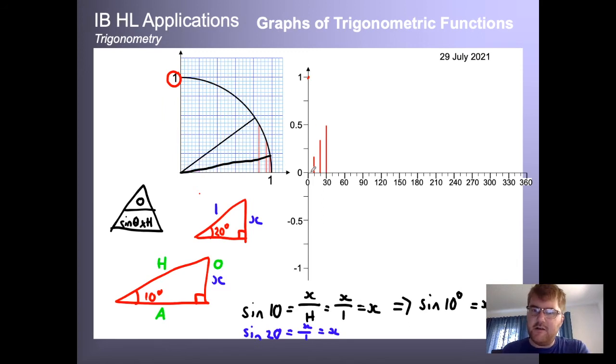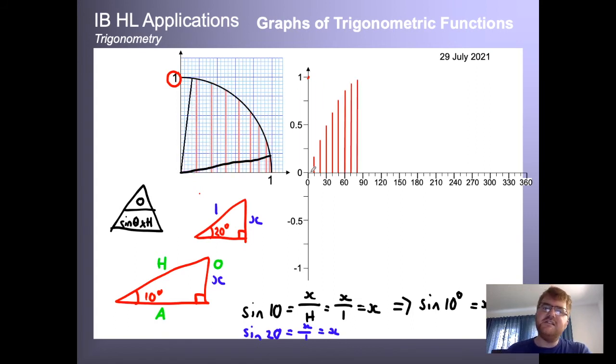And as you can probably see at this point, you can actually do this all the way around. So sine 30, it's going to go here, sine 40, sine 50, sine 60, sine 70, sine 80. And notice that sine 90, which makes lots of sense here, is going to be 1, because it's the complete vertical direction there. So we're going to pop that in over there.